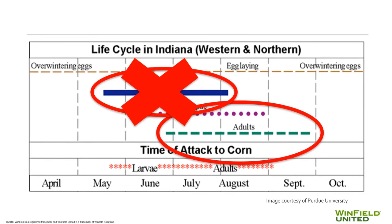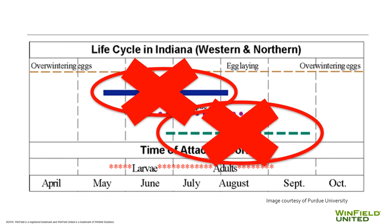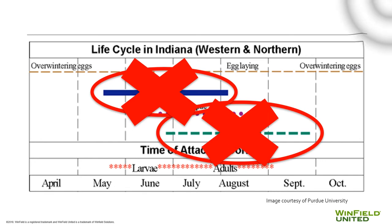Successful control of this pest comes down to controlling the larvae. If you kill the larvae, you prevent the adults from forming. If you kill the larvae, you prevent them from feeding on and injuring your corn roots.